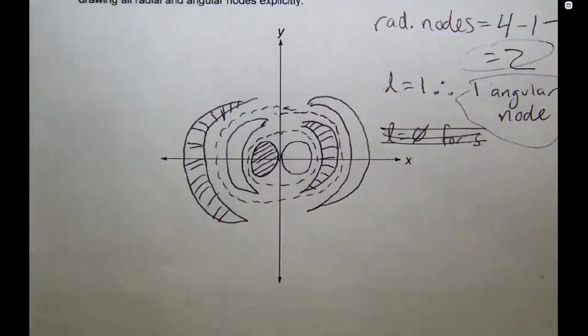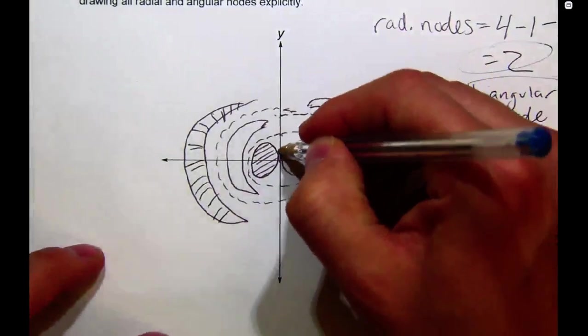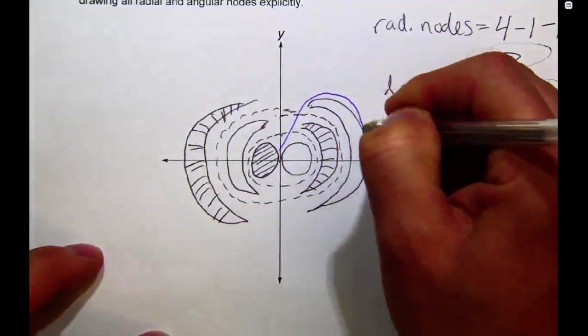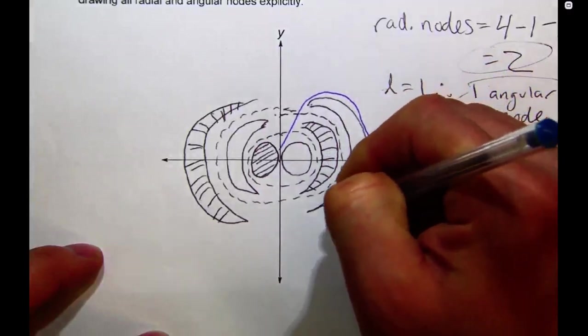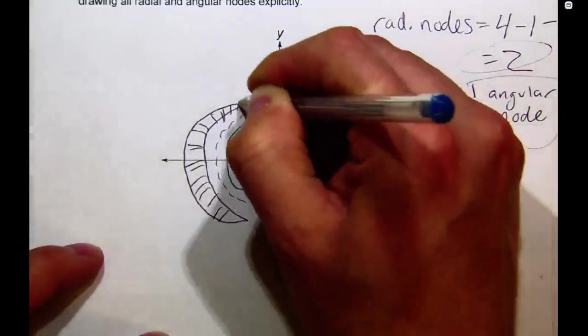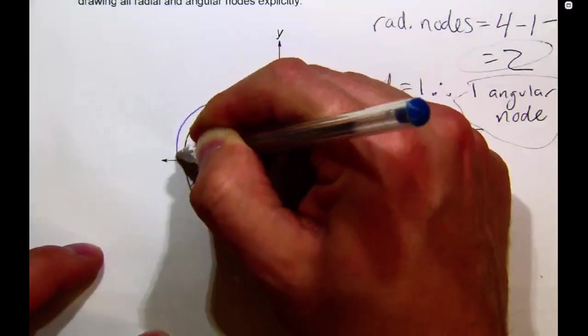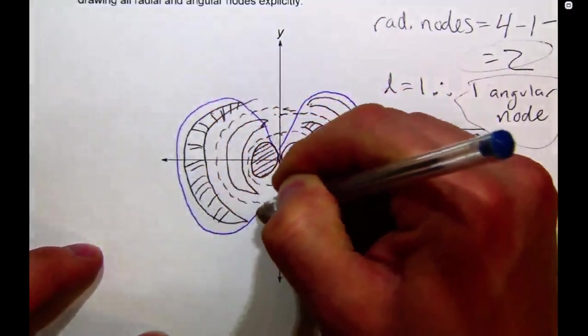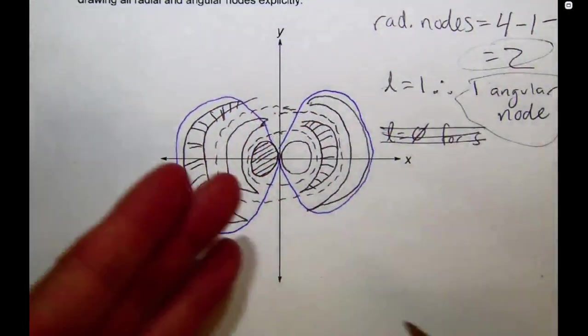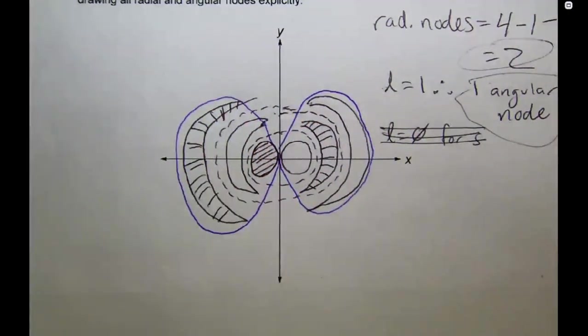If I just sketch around, kind of trace the outside contour of this. Tracing this outside contour gives me the p orbital shape that you know and love from organic chemistry.